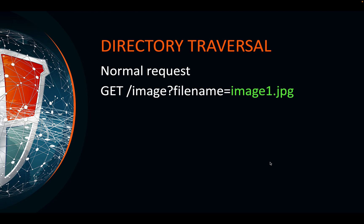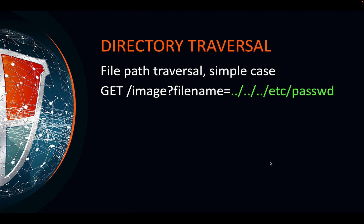Consider a normal request — it may look like this: a GET request with a parameter name 'filename' and the user input is 'image1', so image1 is being loaded — very straightforward. But what happens if you have a simple case like this and you can replace the filename from image1.jpeg to the path traversal sequence dot-dot-slash dot-dot-slash dot-dot-slash etc/passwd?